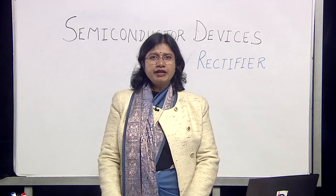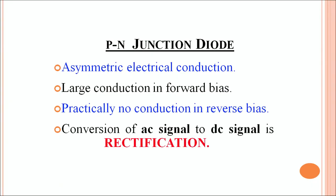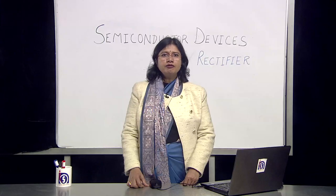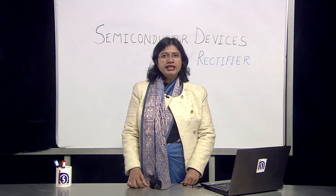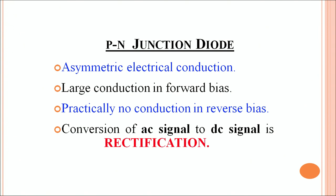As we are aware of a p-n junction diode, in a p-n junction diode there is asymmetric electric conduction. By asymmetric electric conduction we mean that whenever the diode is in forward bias there is a large conduction of current, meaning the diode offers very less resistance. In reverse bias the diode practically does not conduct — it ideally offers infinite resistance and blocks the current. This particular property of a p-n junction diode is utilized in the process of rectification, which means we want to convert an AC signal to a DC signal.